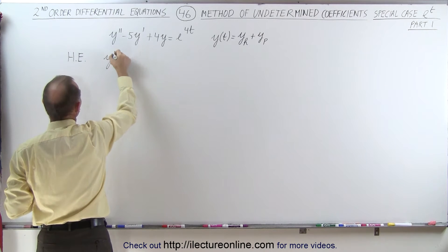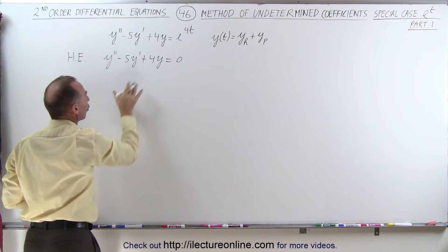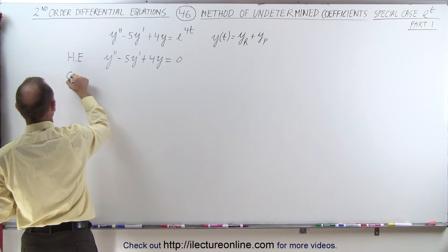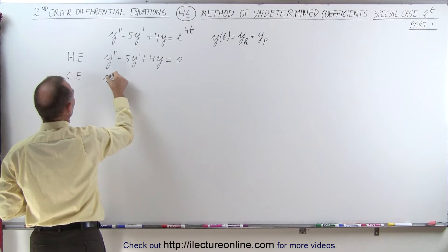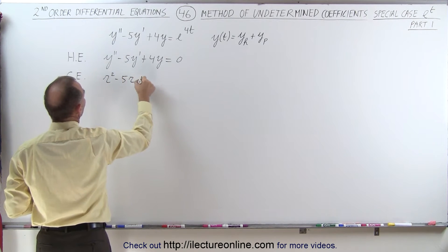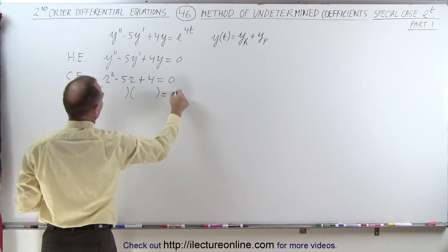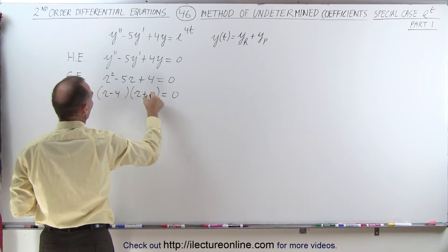And so we rewrite this and set it equal to 0. Now we solve for the homogeneous part. Again, we do that by using the characteristic equation. And so we get r squared minus 5r plus 4 equals 0. We can factor this.